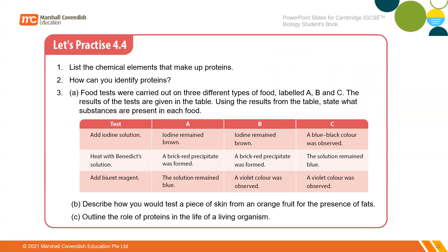There is a practice slide. For the chemical elements that make up proteins, the answer is: carbon, hydrogen, oxygen, and nitrogen. Sulfur is also acceptable. To identify proteins, we use the Biuret test, and the color changes from blue to purple.